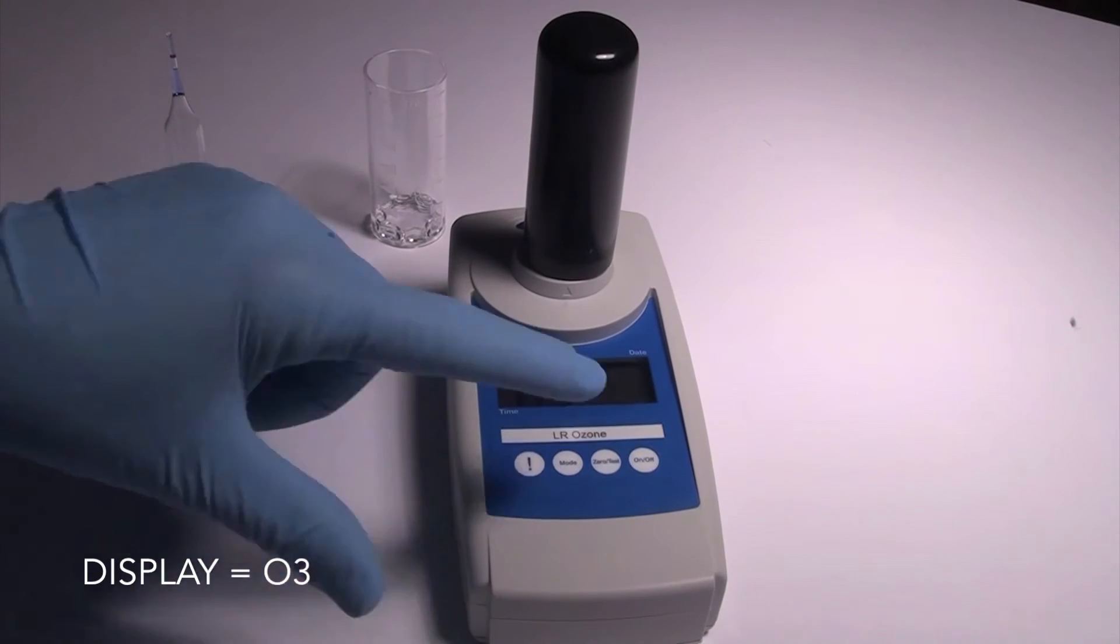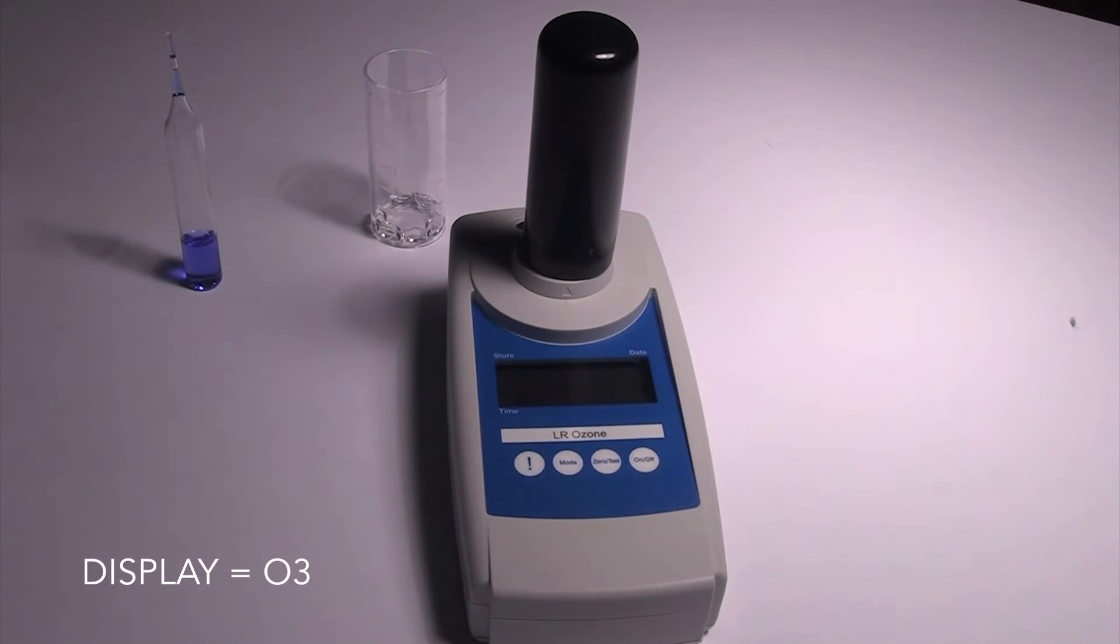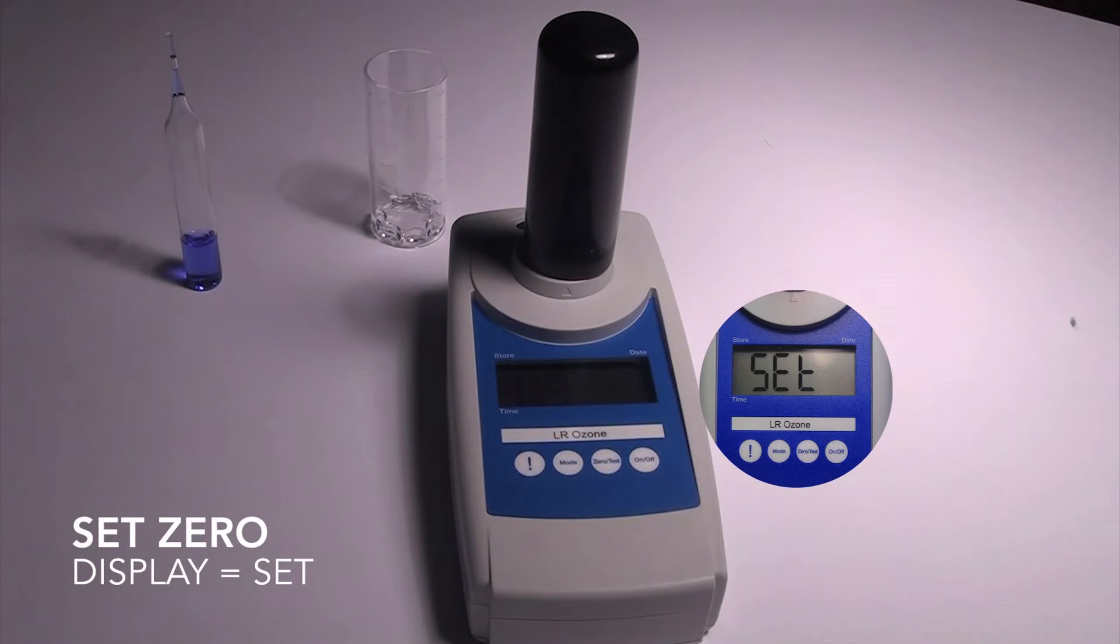Place the light shield over the zero ampoule. Press the zero test key. The ozone symbol will flash for approximately 8 seconds, and then the display will show SET.